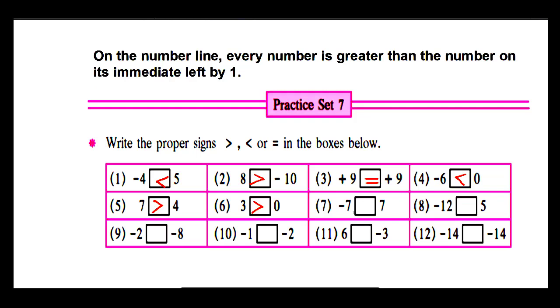Example 7: negative 7 and 7. 7 is greater than negative 7. Example 8: negative 12 and 5. 5 is greater than negative 12.